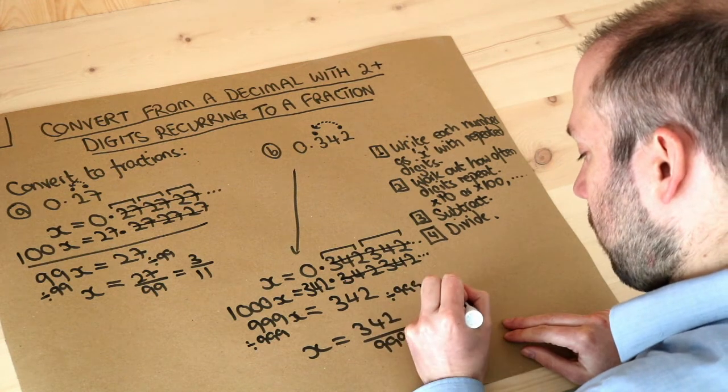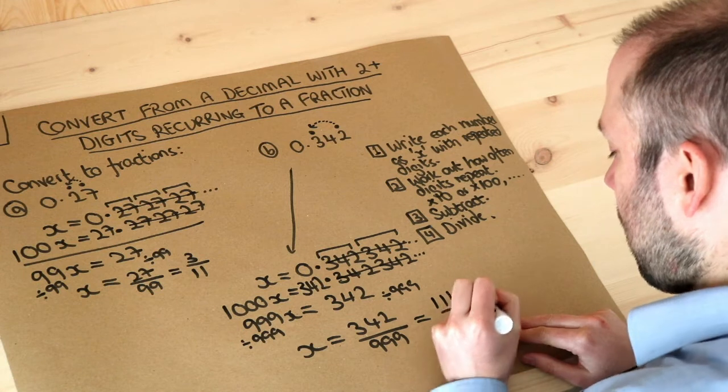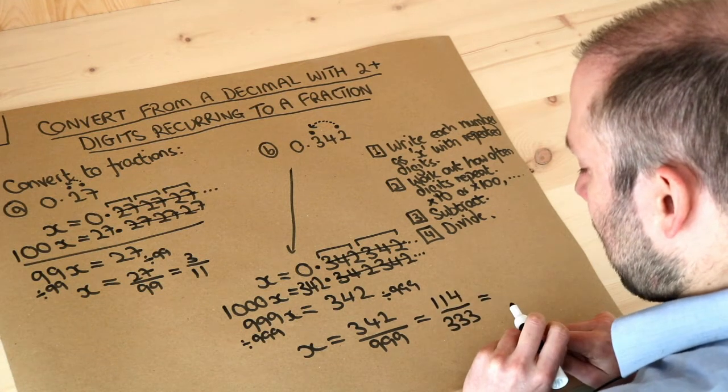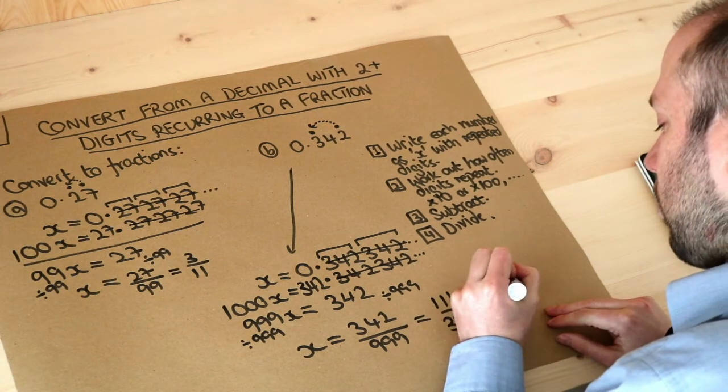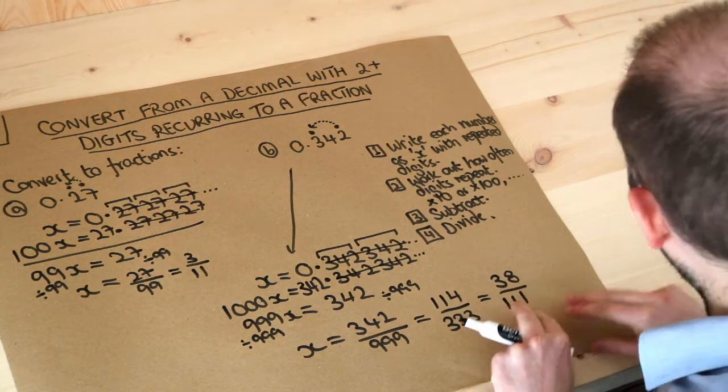And we can divide by 3 again, and we get 38 at the top and at the bottom we get 111. And I think that's as far as we can simplify that.